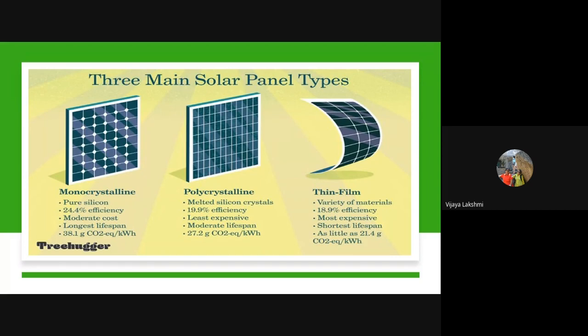In the market there are three types of solar panels depending on material used: monocrystalline, polycrystalline, and thin film. Monocrystalline has the highest lifespan and highest efficiency, while thin film has the lowest lifespan. As efficiency is higher, cost is also higher — so monocrystalline costs a bit more than the other two panels.